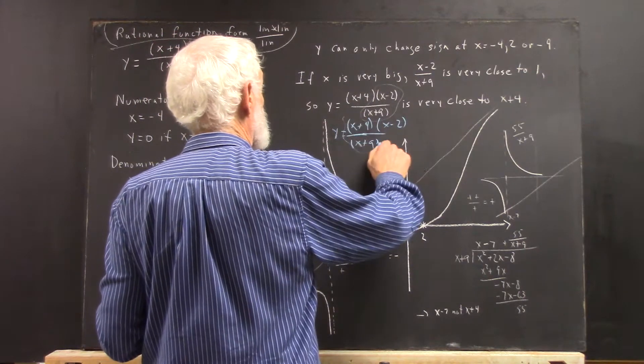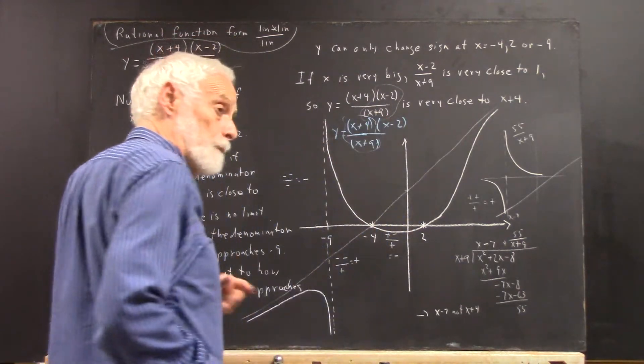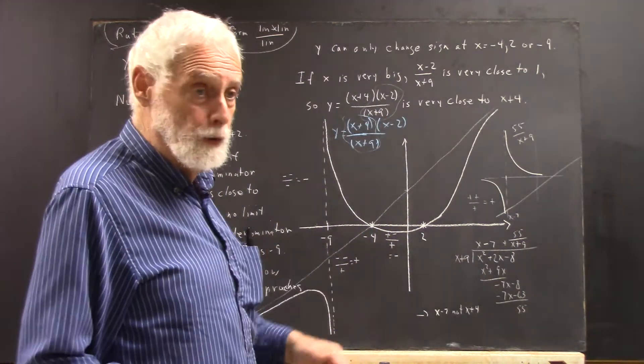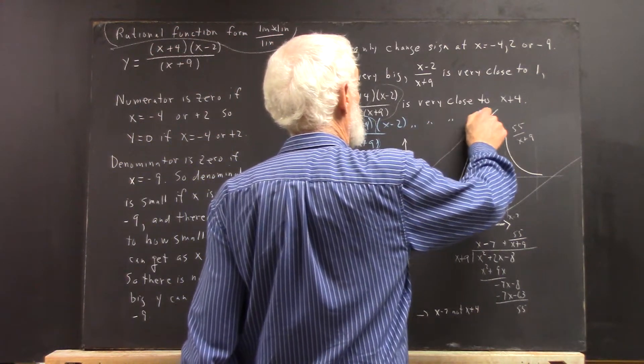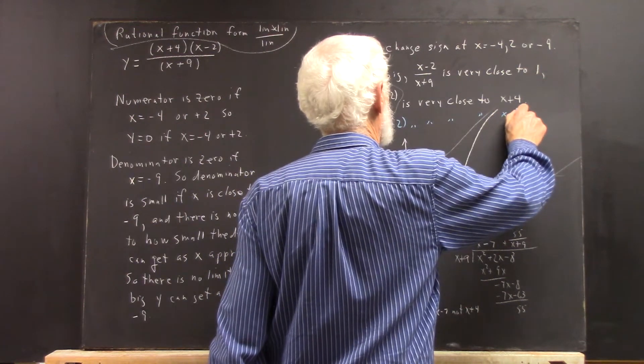Because (x+4)/(x+9) is very close to 1, so this is very close to x-2.